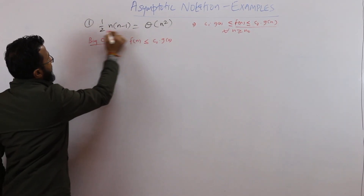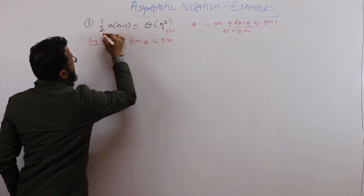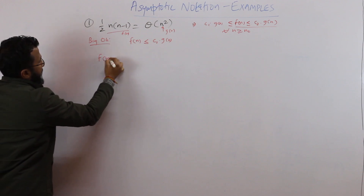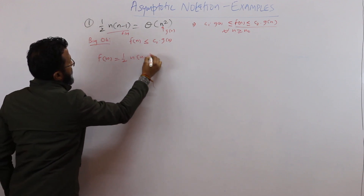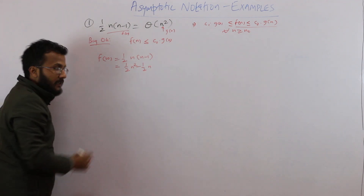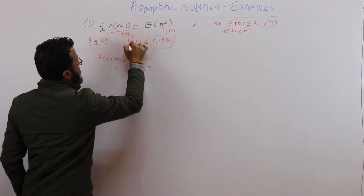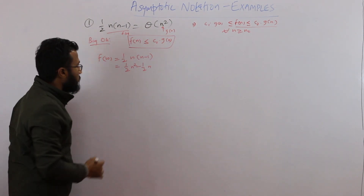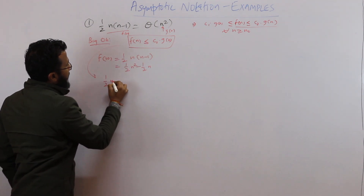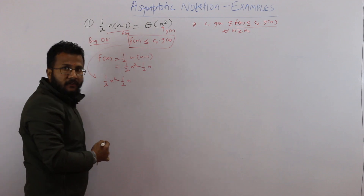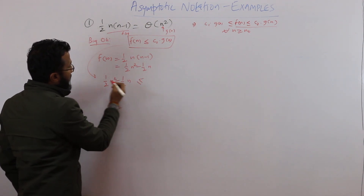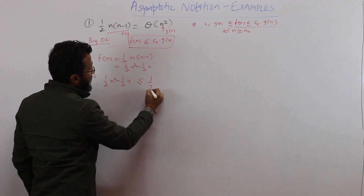So let us take: this is my f(n), this is my g(n). We write f(n) = ½n(n-1). Simplifying further, it becomes ½n² minus ½n. Now I need to prove that f(n) is less than or equal to c2 into g(n). Can I write ½n² minus ½n is less than or equal to ½n²?